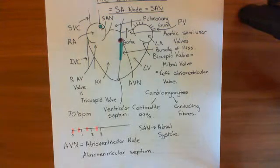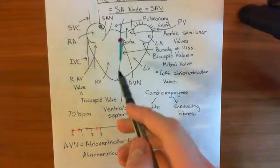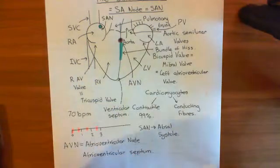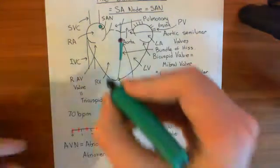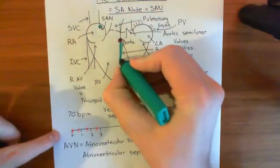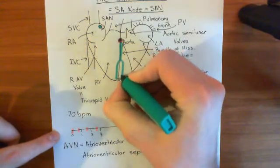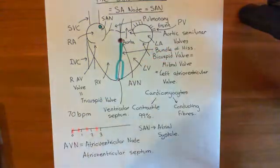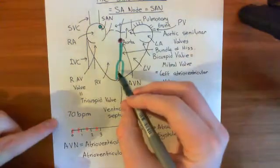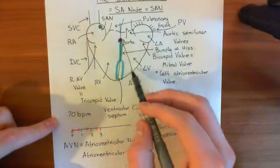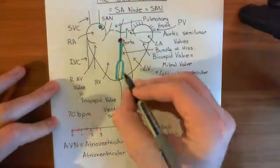Then this action potential is going to conduct down the bundle of His, which will split at some point into two separate branches. One is going to service the right heart and the other is going to service the left heart.